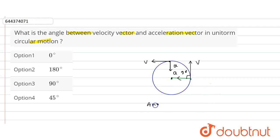Angle between velocity vector and acceleration vector is equal to 90 degrees, always. See here, when the particle comes here, the velocity will be in this direction and acceleration will be in this direction. So angle between them is 90 degrees.